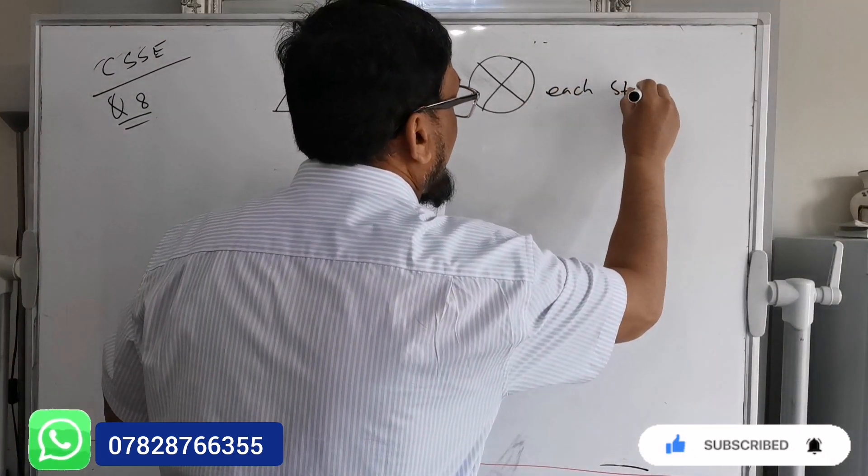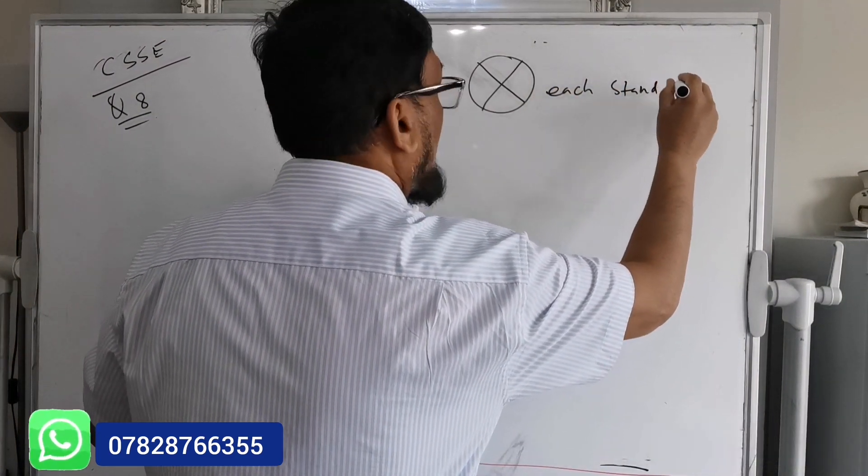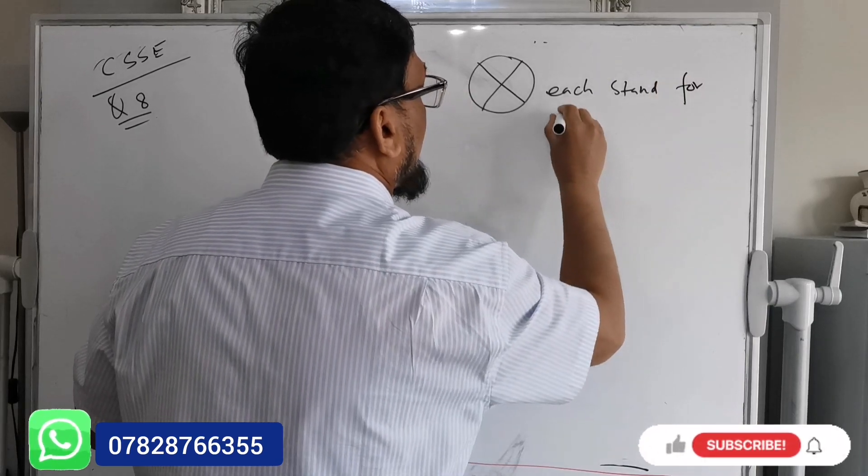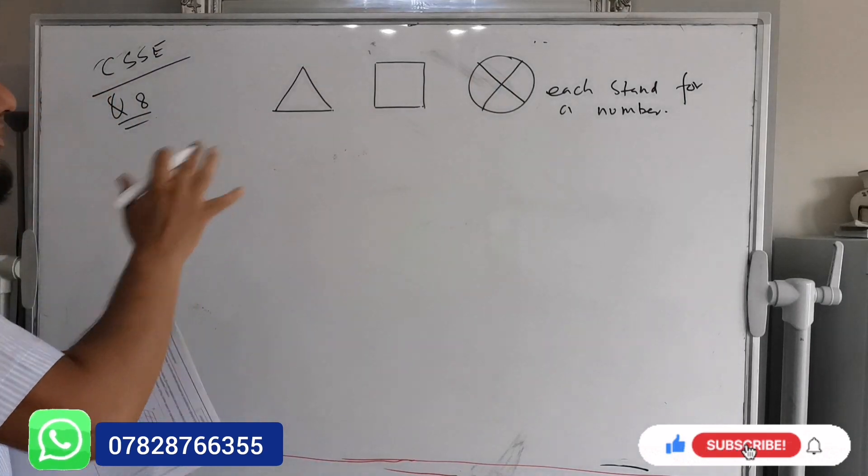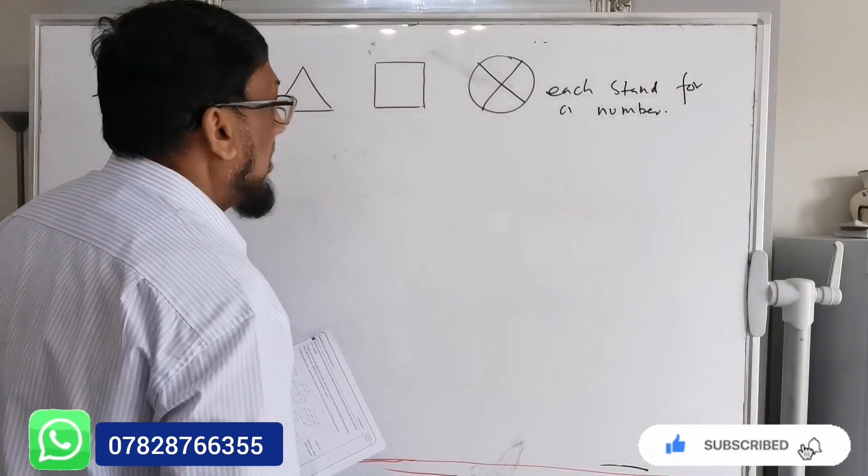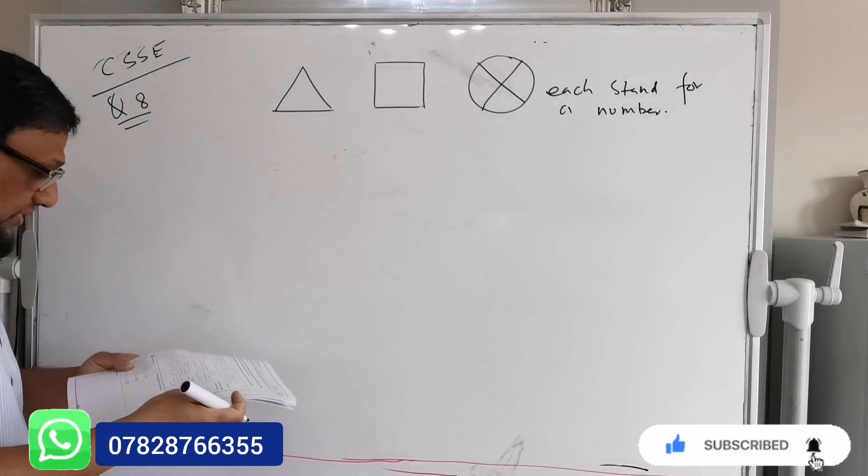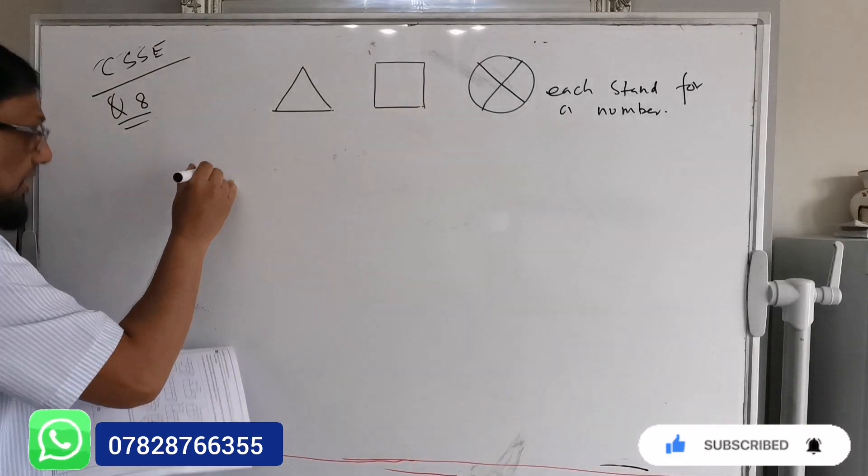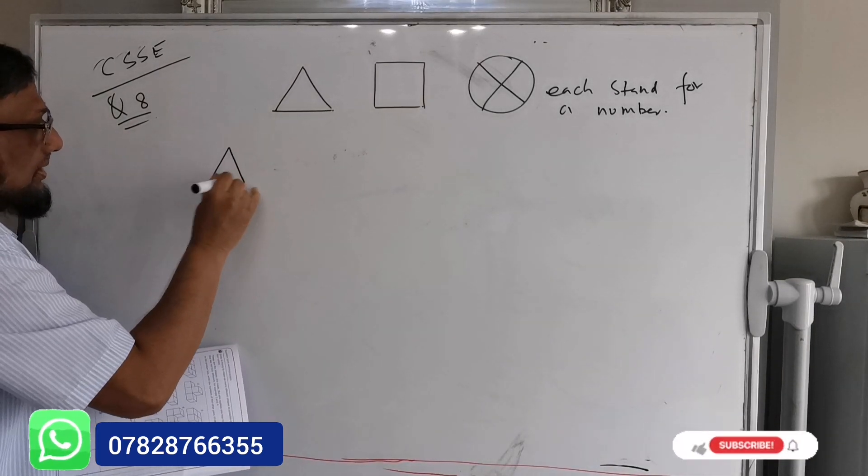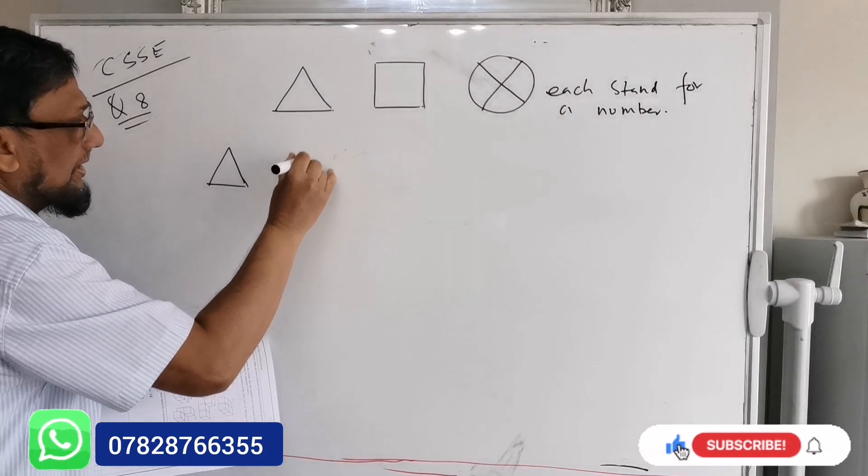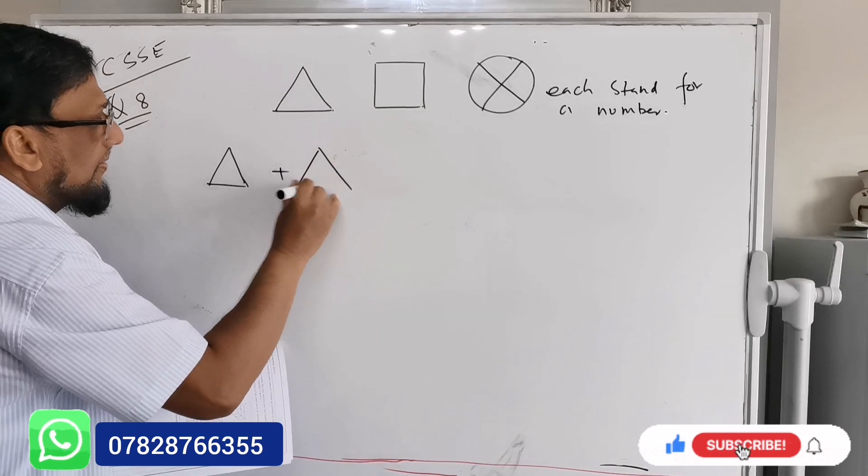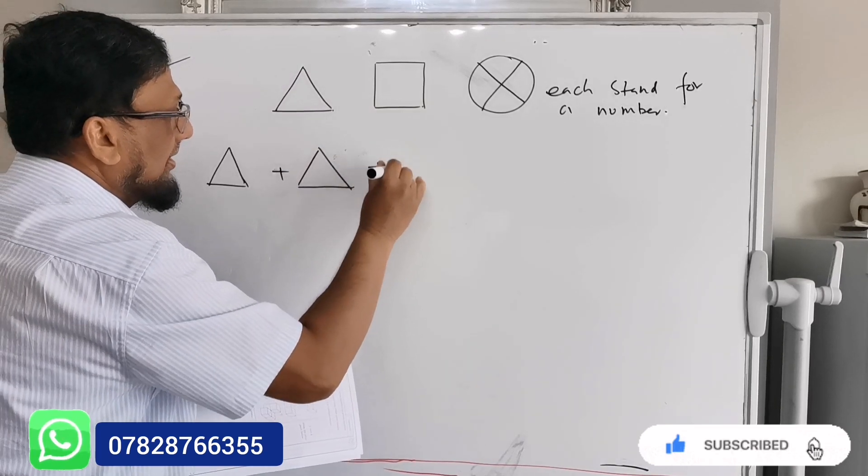Each is for a number, but we don't know which one has what number. So what they say is one triangle, second triangle, and third triangle.